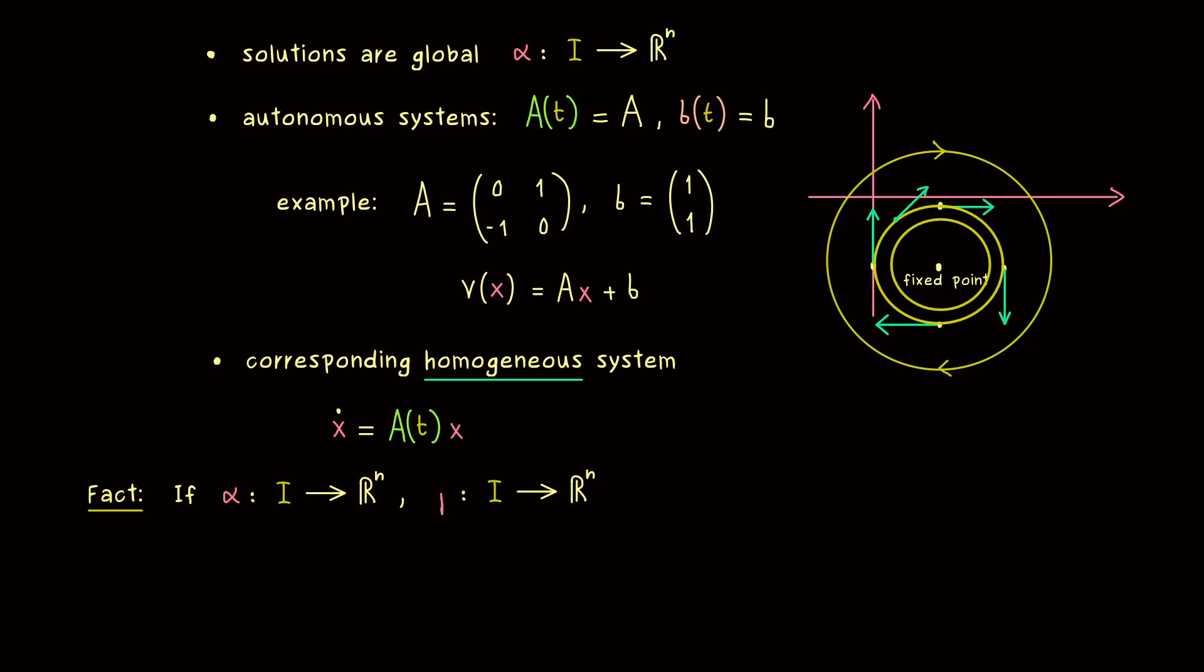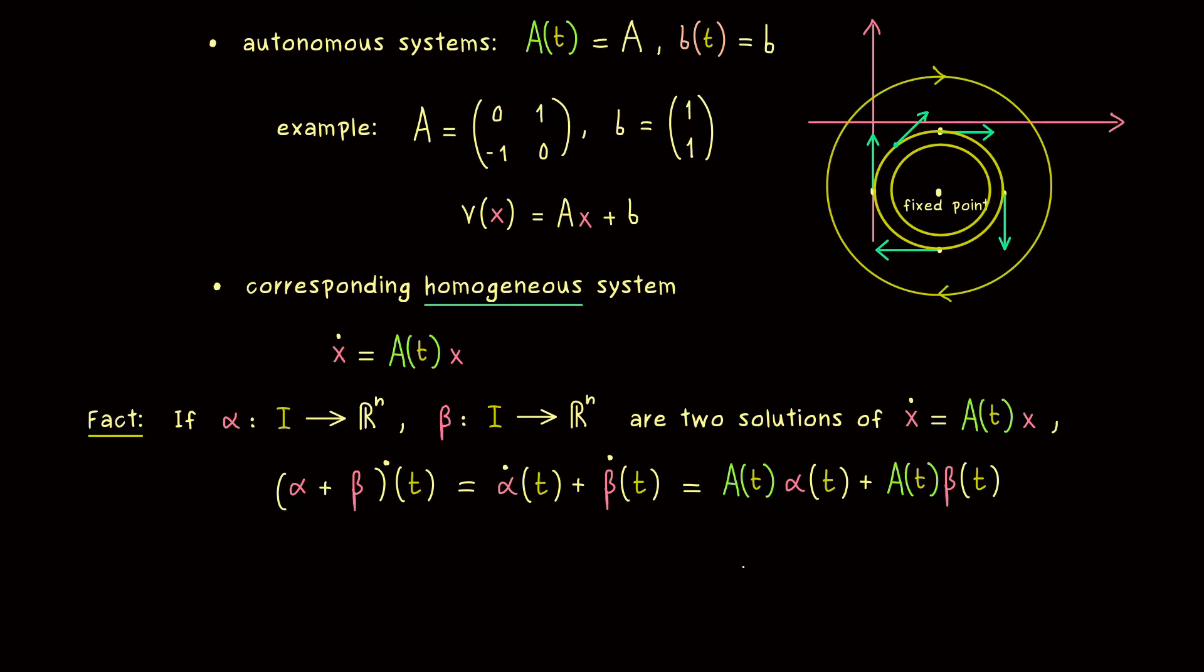So more concretely, just imagine that someone gives you two solutions of this system, and let's call them alpha and beta. And then we can simply check if the addition of the two solutions is a solution again. So we just take alpha plus beta and calculate the derivative. Hence I put a big dot here to denote the derivative. And since differentiation is a linear operation, we can also write alpha dot plus beta dot. And since alpha and beta are solutions, we can also substitute this with the right hand side.